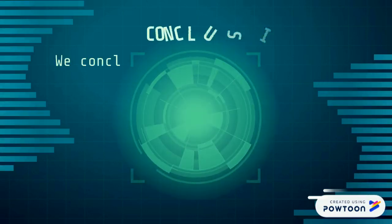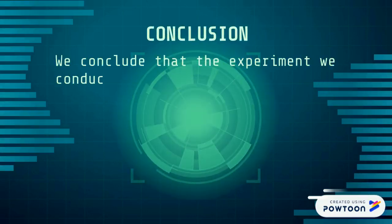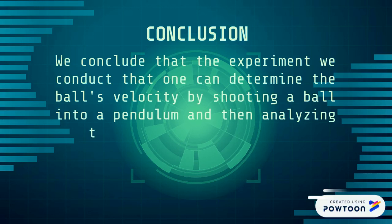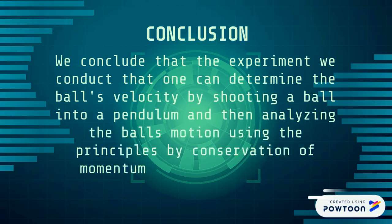Conclusion: We conclude from the experiment we conducted that one can determine the ball's velocity by shooting a ball into a pendulum and then analyzing the ball's motion using the principles of conservation of momentum and conservation of mechanical energy.